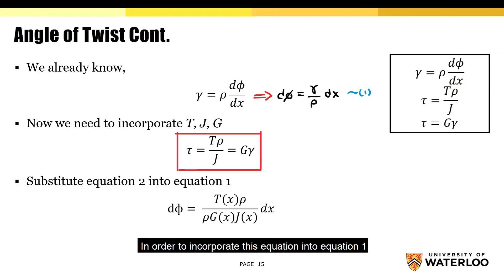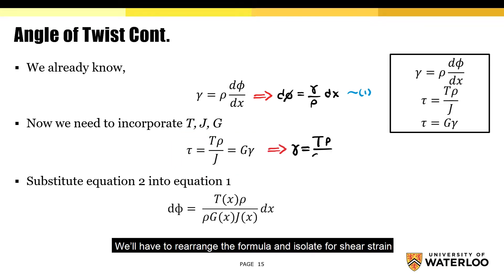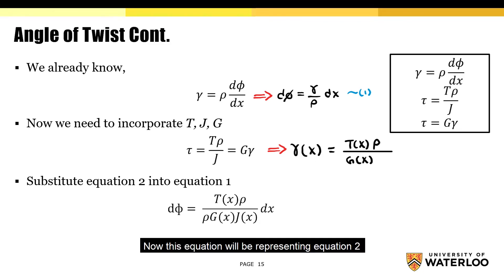In order to incorporate this equation into equation 1, we'll have to rearrange the formula and isolate for shear strain. As I previously mentioned, phi is a function of T, G, and J, and so I can rewrite the isolated equation like this. Now this equation will be representing equation 2.